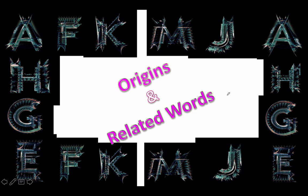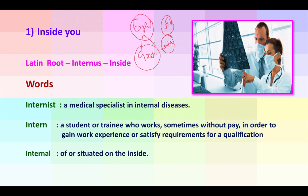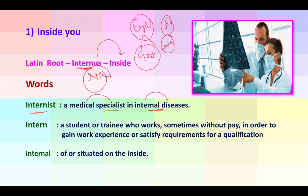Let's begin with origins and related words. Please note that 60% of English is made from either the Greek language or the Latin language, and that is why most root words are taken from Greek or Latin. The first root is 'internus,' which means inside — self-explanatory, like 'internal security.' From this we get the word 'internist,' a medical specialist in internal diseases. Any doctor who specializes in internal diseases is called an internist. The branch most popular these days is internal medicine.